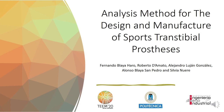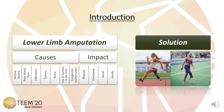This work focuses on the analysis method for the design and manufacture of sports transtibial prosthesis processes. Traumatic lower limb amputations are the most common in previously healthy individuals under 40 years of age, but there are multiple causes of amputation in addition to accidental ones. The incidence in young people produces the need for functional adjustment to daily, professional, and sport activities.